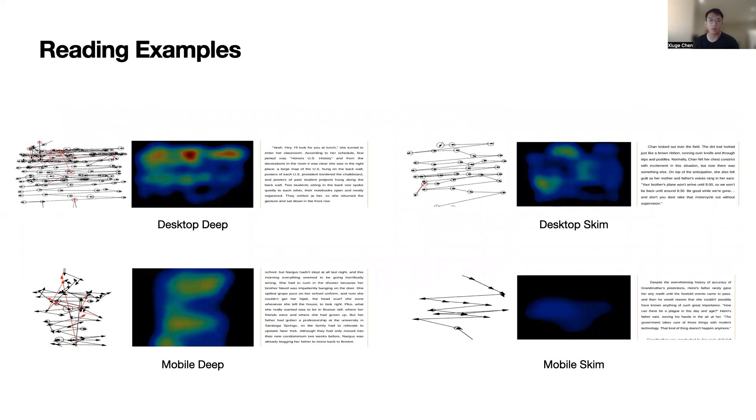And then next, we plot the eye movement graph and gaze heat map for each reading condition. It is quite obvious that readers show different reading patterns in deep versus skim reading. In deep reading, the eye movement can be a lot denser with more short saccades and longer fixations. We use red lines here to indicate regressions and you can see deep reading has way more regressions. In skim reading, the pattern is much sparser with fewer saccades and fixations.